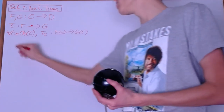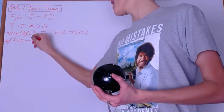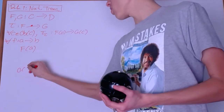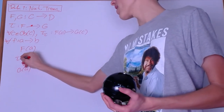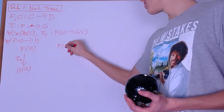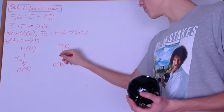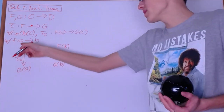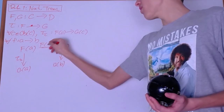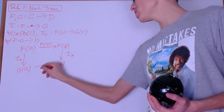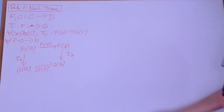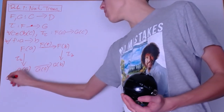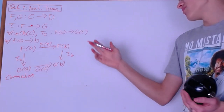Now we need to do the same for the arrows. For every arrow f from A to B, let's write out what we know. We have F of A and G of A, connected by tau A. We have F of B and G of B, connected by tau B. We can transition from F of A to F of B using F applied to that morphism, and from G of A to G of B using G applied to the morphism. This gives us a nice commutative diagram, and if it commutes, this is a natural transformation.